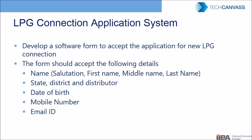For simplicity, I have chosen a very small requirement: an LPG connection application. The customer says they want a software with a single form to accept applications for new LPG connections. When somebody applies, they should provide information including salutation, first name, middle name, last name, state, district, distributor — because the distributor is the person who actually distributes the licenses — date of birth, mobile number, and email ID.